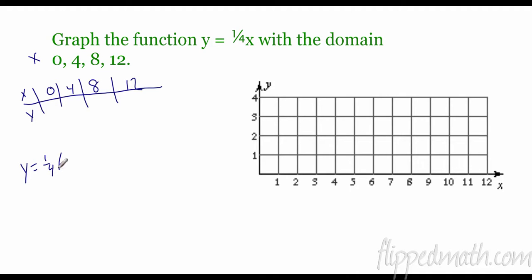So I'm going to plug these each in. So Y equals one fourth of zero. Well, one fourth times zero is zero. That's pretty easy. And we can come over here and plot that. Zero, zero goes right there. My next one, Y equals one fourth of four. One fourth of four is one.